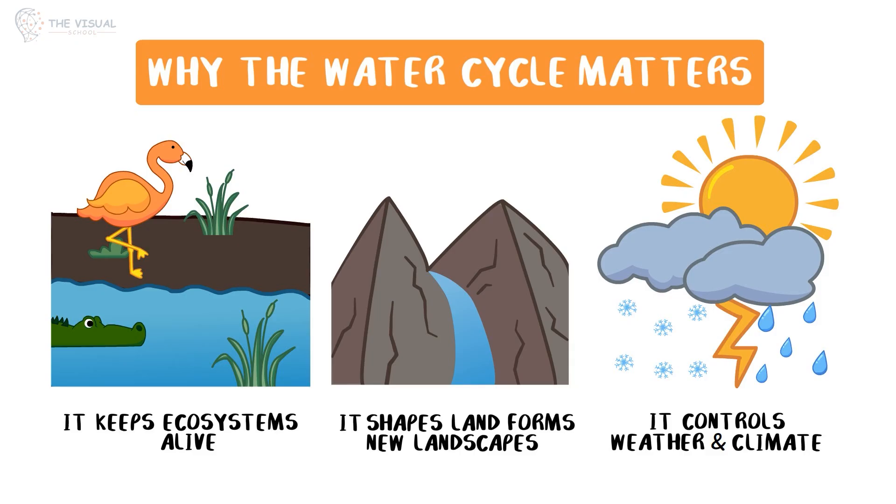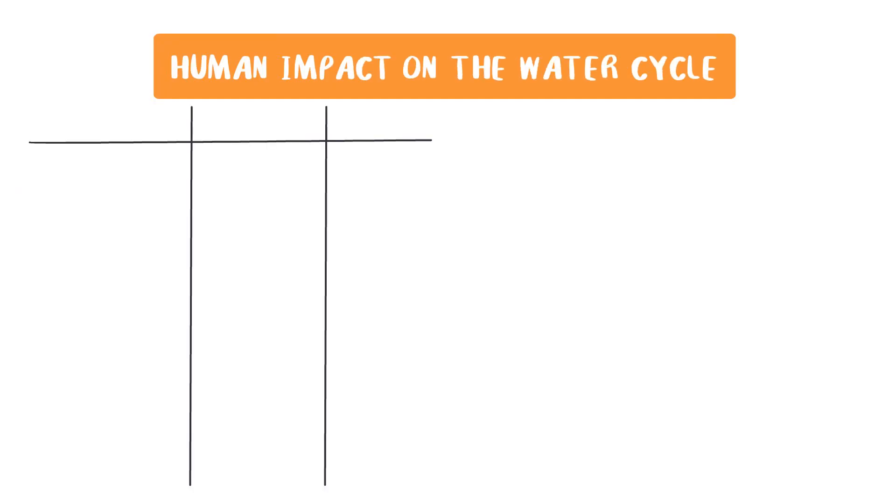Without the water cycle, Earth would be a dry, lifeless rock. But human activities can disrupt this delicate balance. Let's talk about a few of those activities that can affect the water cycle.